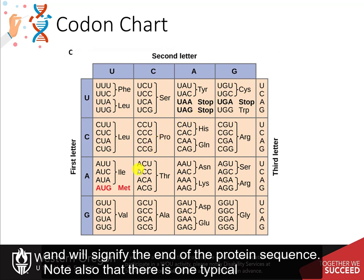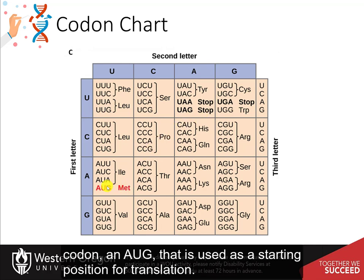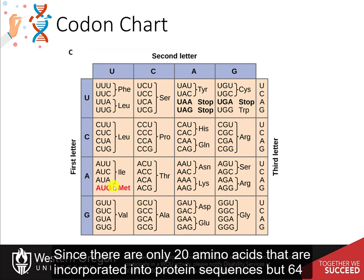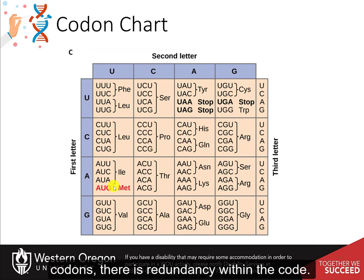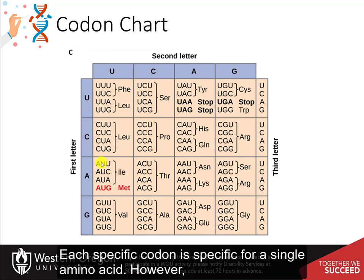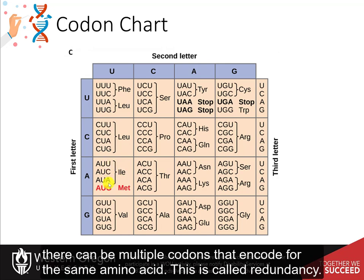Note also that there is one typical codon, AUG, that is used as the starting position for translation. Since there are only 20 amino acids that are incorporated into protein sequences but 64 codons, there is redundancy within the code. Each specific codon is specific for a single amino acid; however, there can be multiple codons that encode for the same amino acid. This is called redundancy.